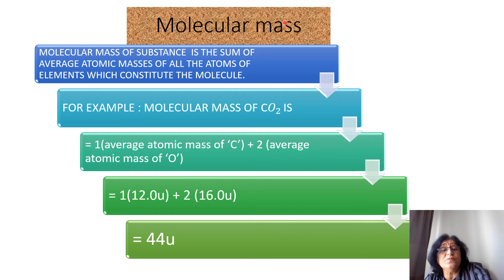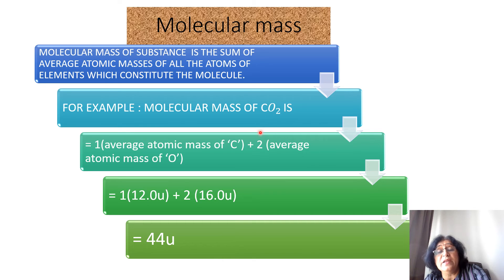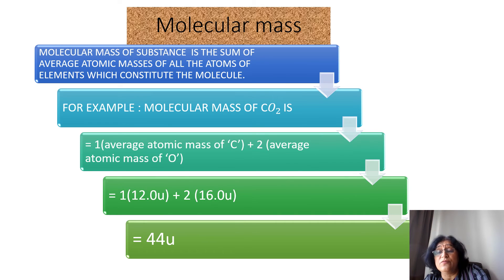Now molecular mass. Molecular mass is the sum of average atomic masses of all the atoms of elements which constitute the molecule. For example, the molecular mass of carbon dioxide (CO₂) is the sum of atomic masses of carbon and oxygen: 1 × 12 + 2 × 16 = 44 U. That is how you calculate the molecular mass of a molecule.